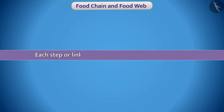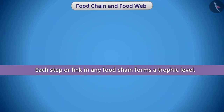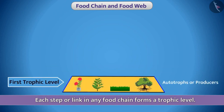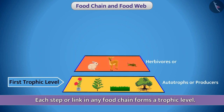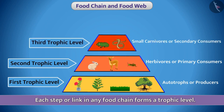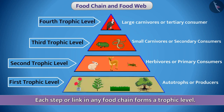Each step or link in any food chain forms a trophic level. Autotrophs or producers form the first trophic level. Herbivores or primary consumers form the second trophic level. Small carnivores or secondary consumers form the third trophic level. And large carnivores or tertiary consumers form the fourth trophic level.